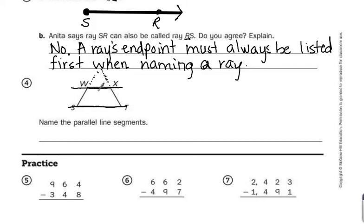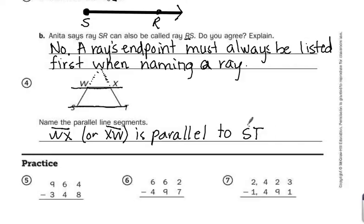So these two line segments, top and bottom, are parallel. So to name them, line segment WX, remember to abbreviate it, we write WX with a line over top of it, or it could also be line segment XW, because when naming lines and line segments, you do not have to start with any particular letter. So line segment WX is parallel, which means it will never intersect or cross, to line segment ST. I'll put that little line segment above, or you could also name it line segment TS.